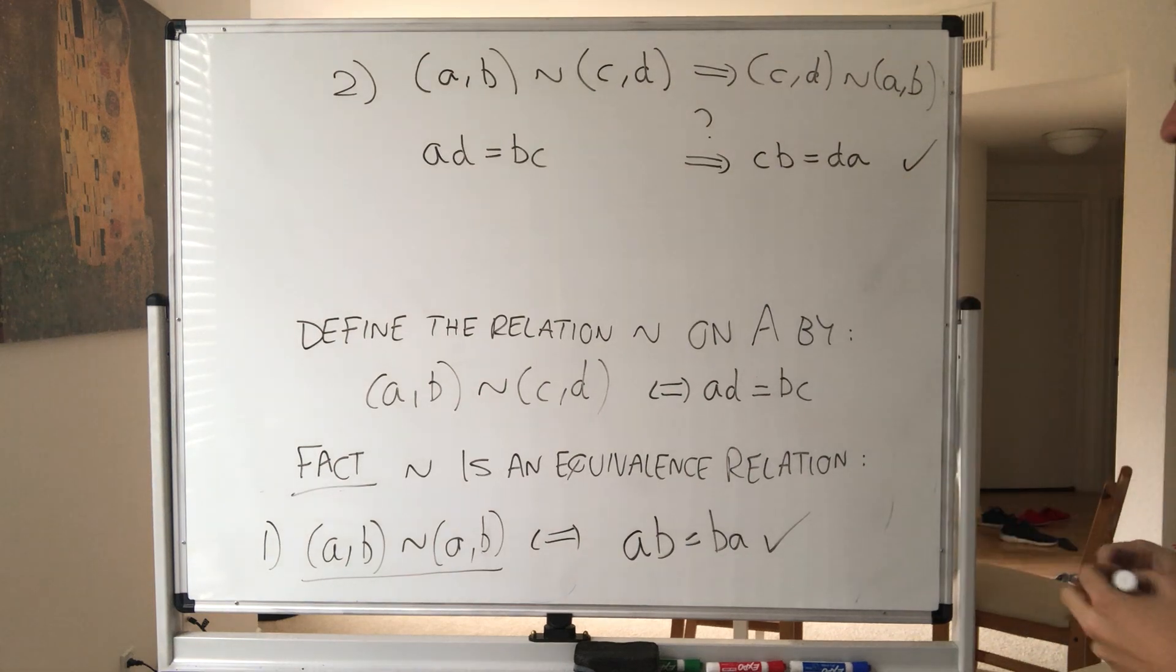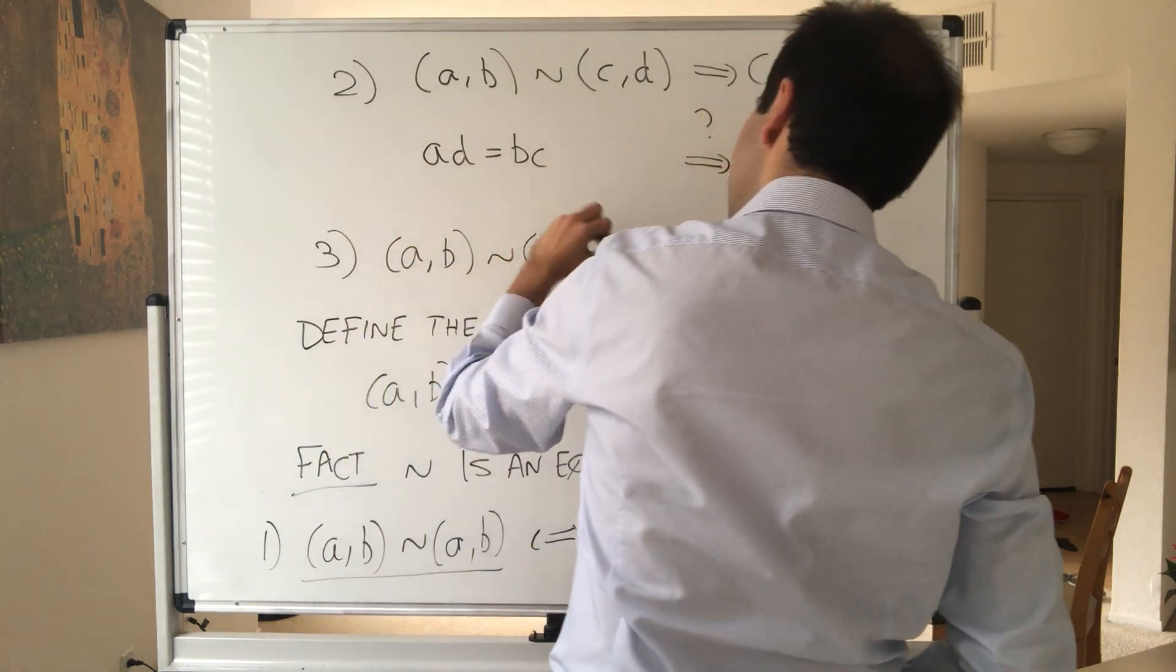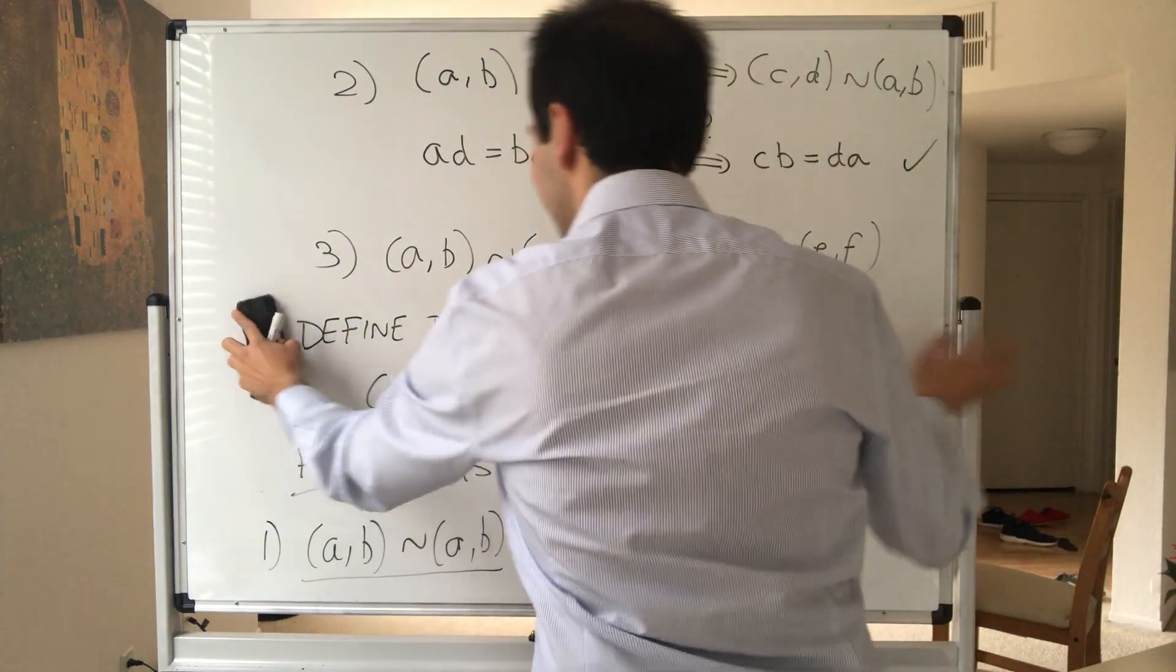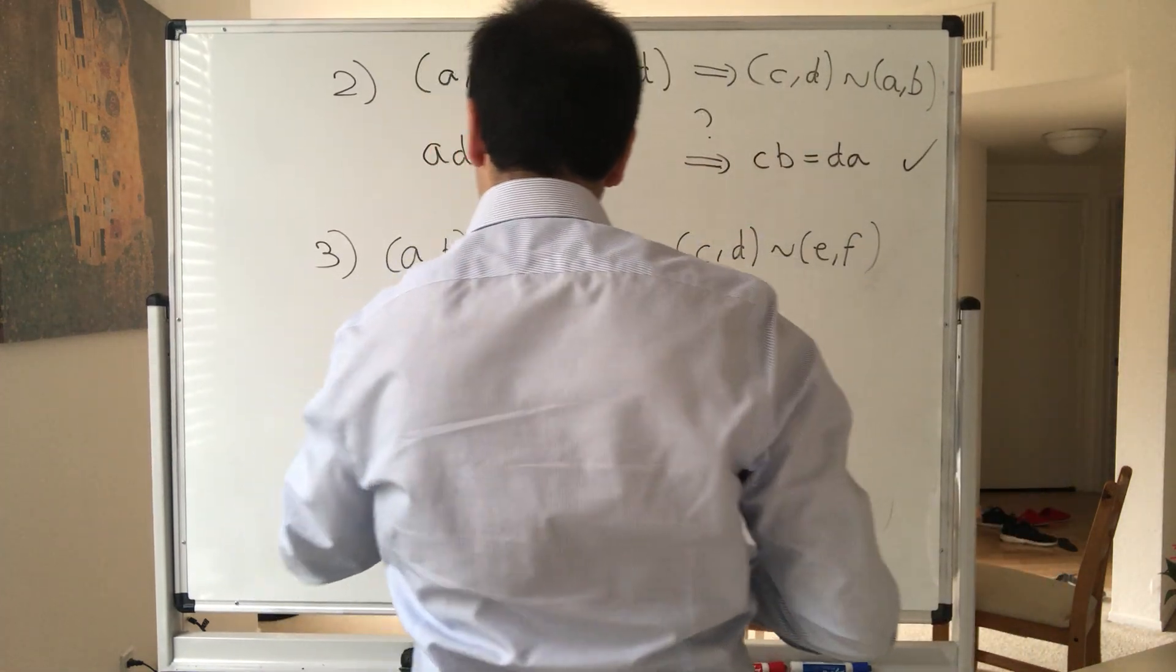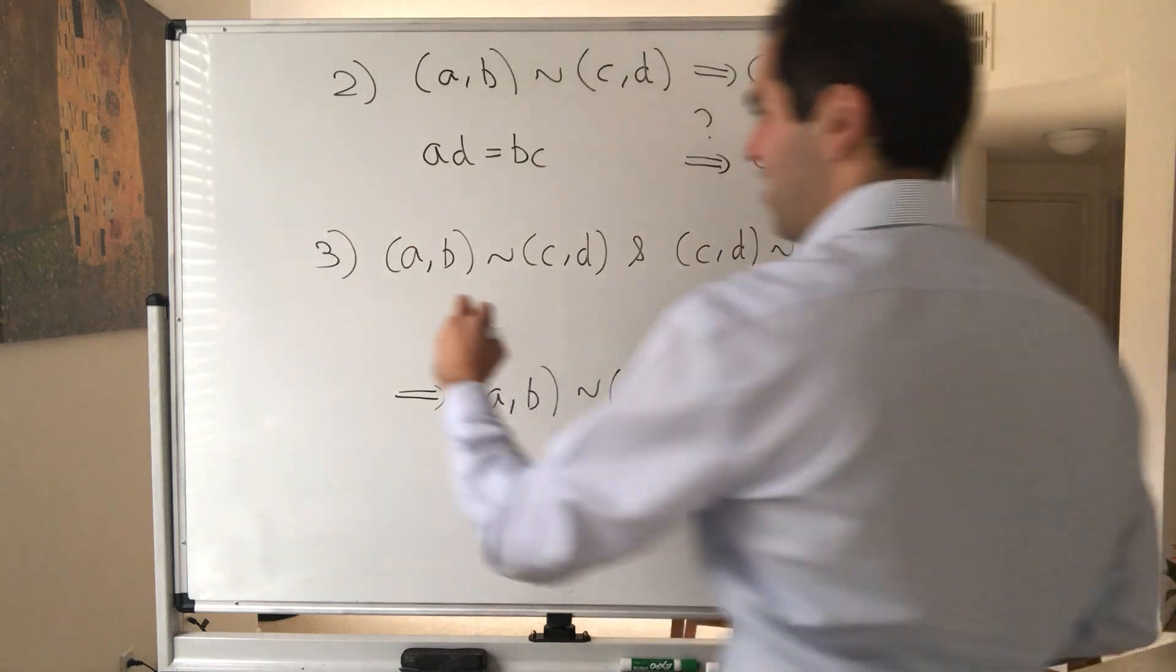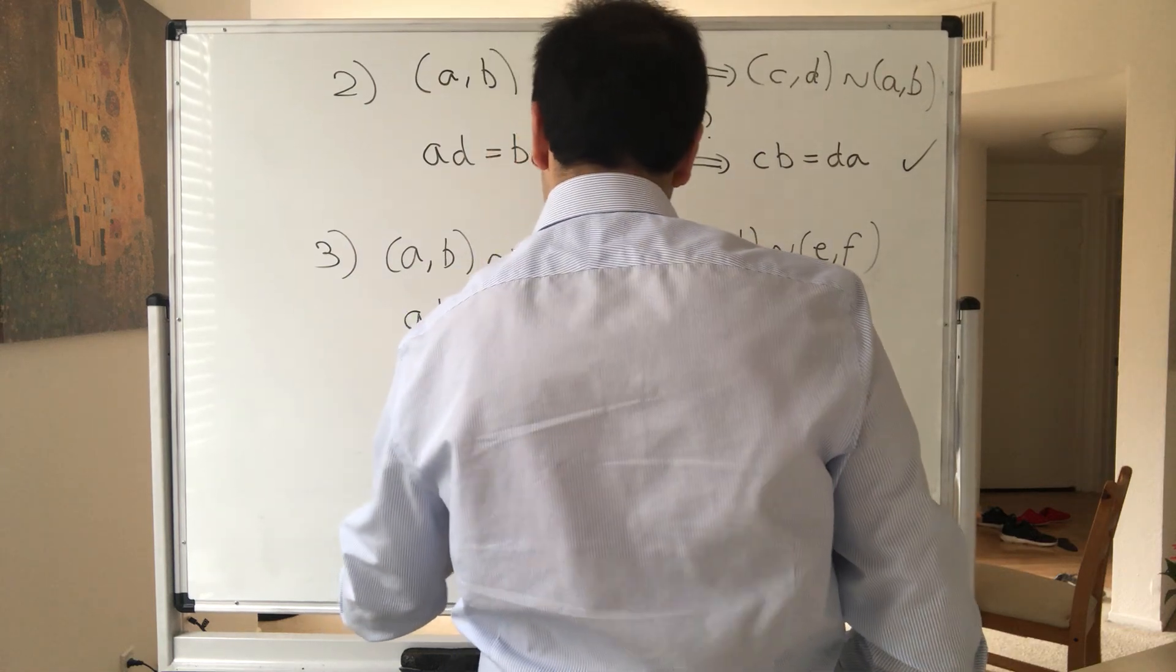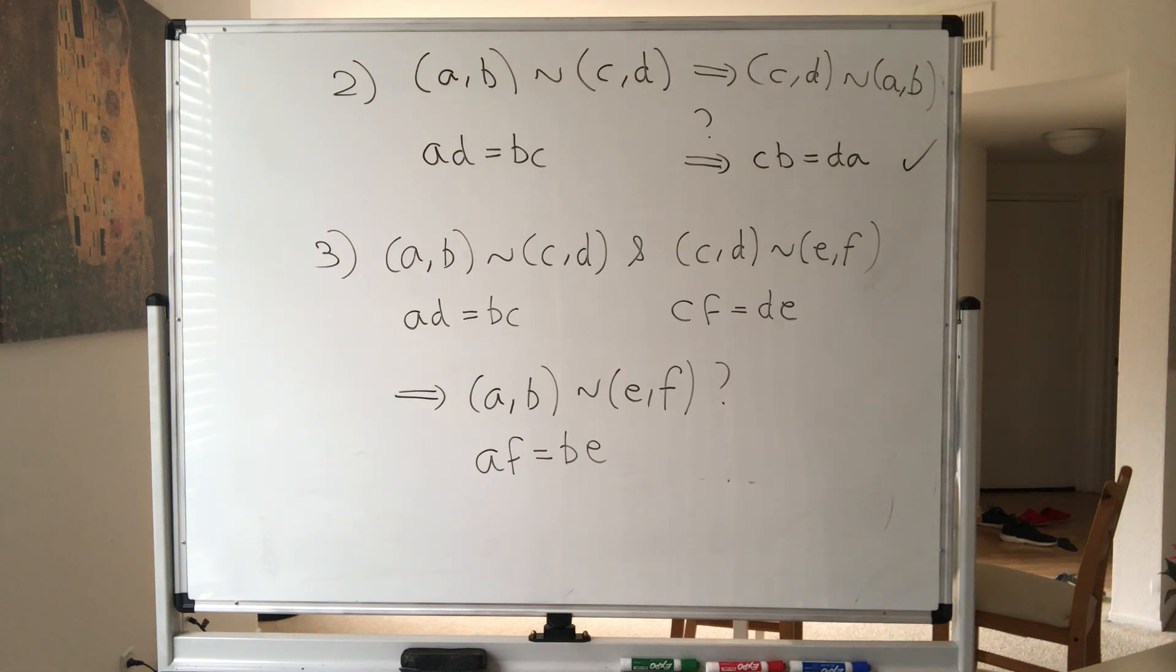And lastly we need to show transitivity, which means if (a, b) is equivalent to (c, d) and (c, d) is equivalent to (e, f), so if x is y and y is z, does that follow that x is z? Do we have that (a, b) is equivalent to (e, f)? And this uses a little bit of algebra. So what we know is AD is BC, and then CF is DE, and what we have to show is AF is BE.